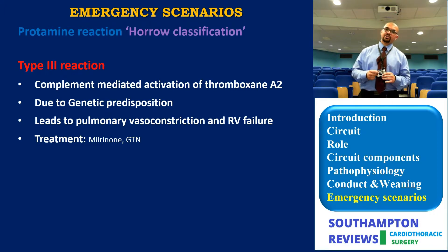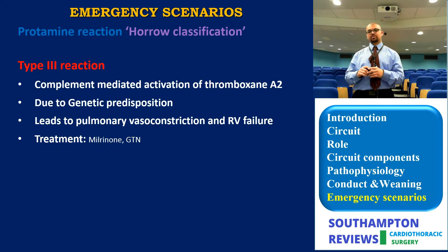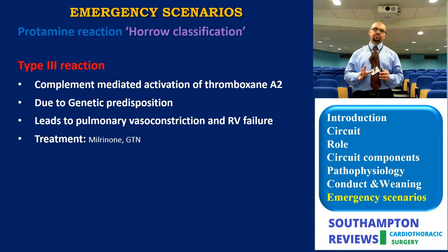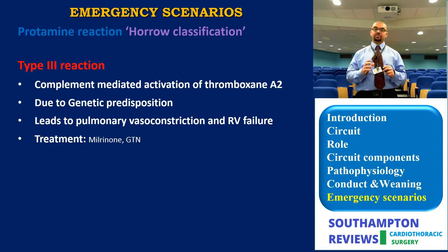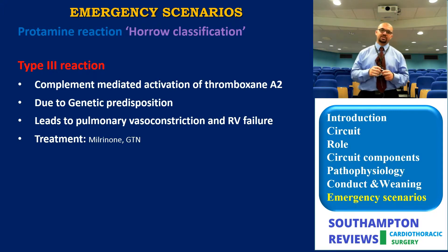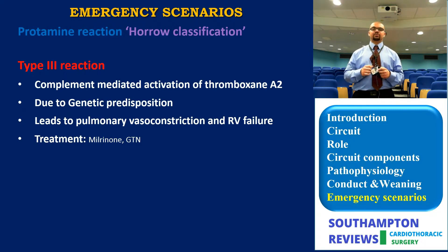Type 3 reaction is a completely different process - it is thromboxane A2 activation mediated by the complement system, occurring in genetically predisposed individuals. It causes vasoconstriction in the pulmonary vasculature, creating acute severe right-sided heart failure. Treatment involves vasodilation of the pulmonary tree using milrinone and GTN. This is the most serious of the three reactions. You will need to give heparin back and it usually takes time to recover RV function.